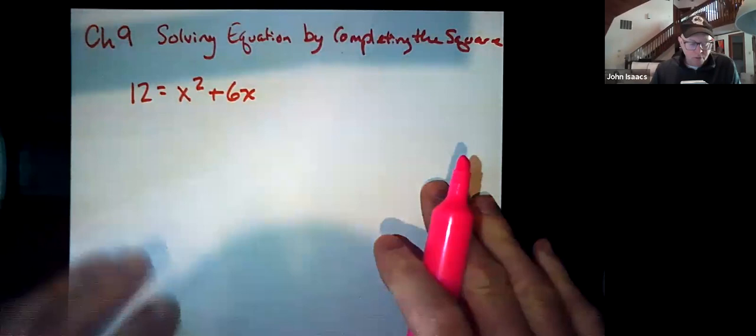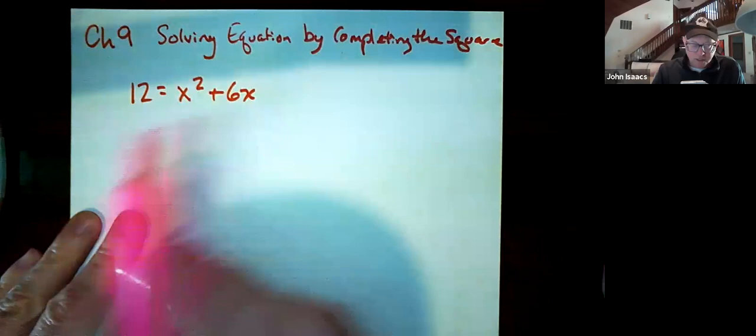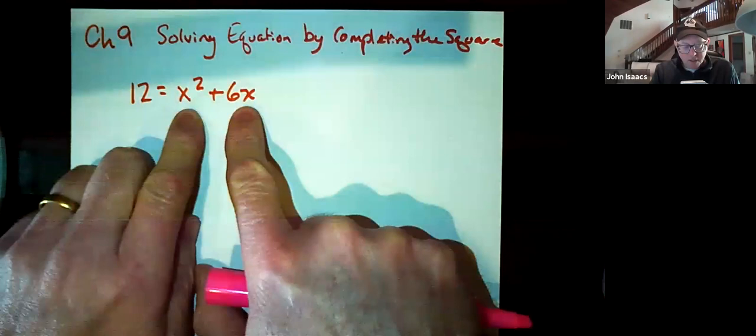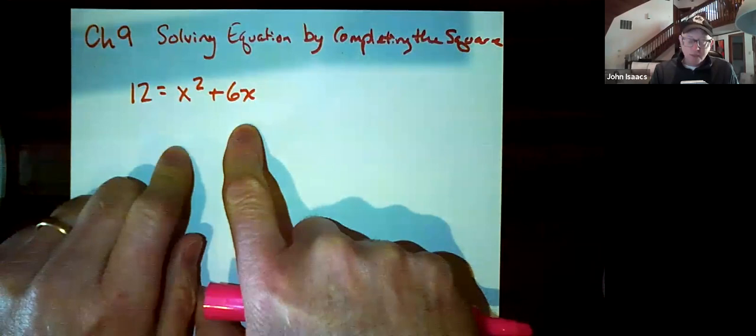Here we have 12 equals x squared plus 6x. Now you might think, let me factor out an x of this side and we'll have x times x plus 6 equals 12. That doesn't do any good because zero product property can't be used unless the other side is equal to zero. So you can't do that.